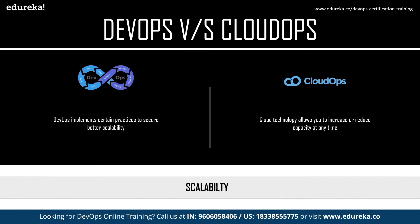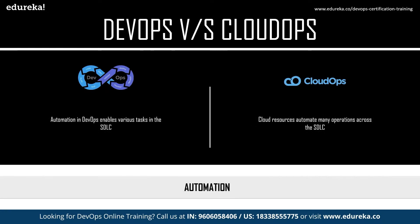DevOps engineers focus on streamlining the development and release of the company's software solutions for the organization's clients. In terms of scalability, DevOps implements practices like continuous integration, continuous testing, and continuous monitoring to secure better scalability. On the other hand, cloud ops allows you to increase or reduce capacity at any point in time, making cloud ops more flexible and enabling better scalability. Regarding automation, both DevOps and cloud ops automate many operations across the software development life cycle.